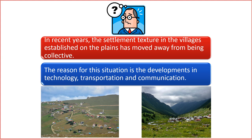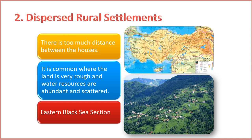In dispersed settlements, houses are scattered over the land as single or several houses. In places where the land is rugged and agricultural areas are small and fragmented, the distance between residences is large. The absence of the obligation to gather around a certain water source is effective in dispersed settlement. In our country, scattered settlements are mostly seen in the Black Sea region.